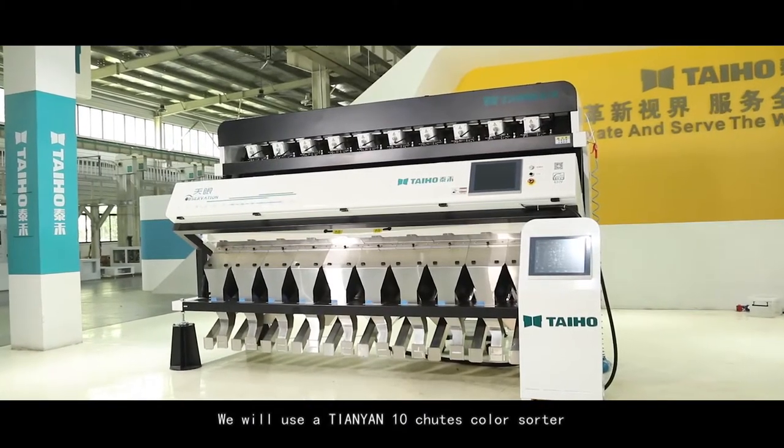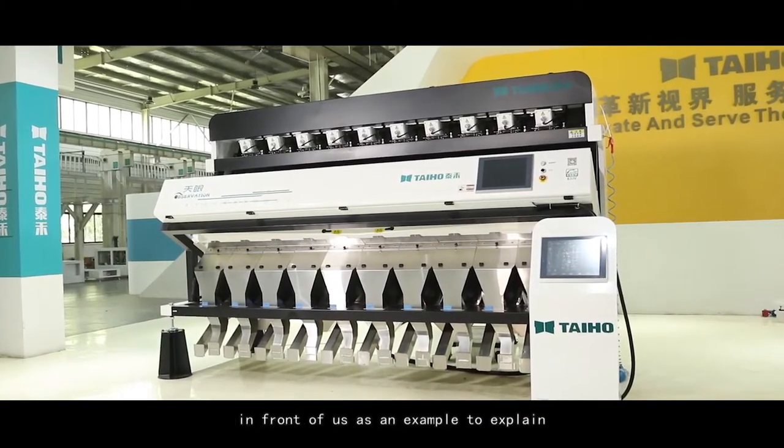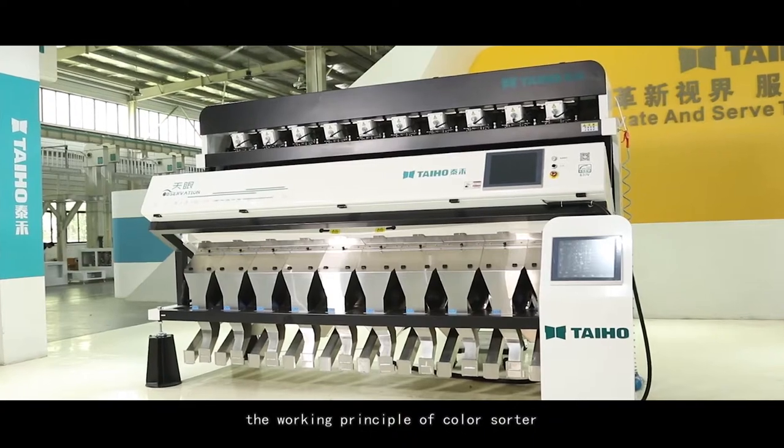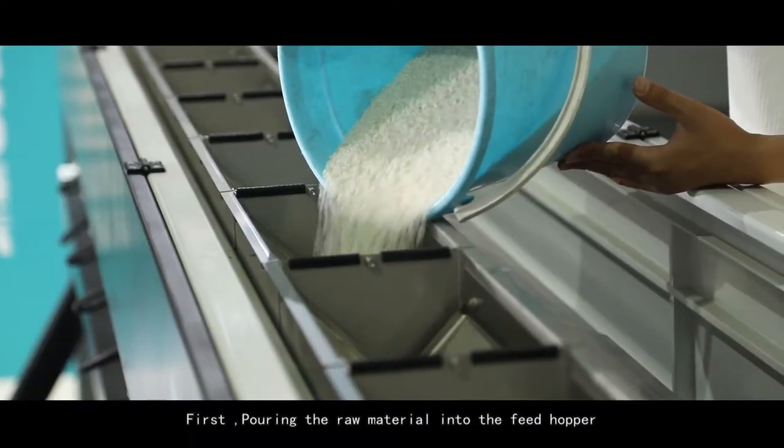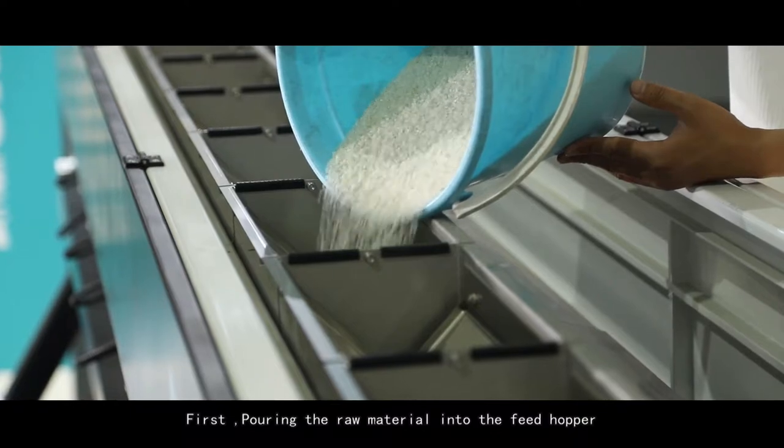We will use a Tianyin 10 shoots color sorter in front of us as an example to explain the working principle of color sorter. First, pouring the raw material into the feed hopper.